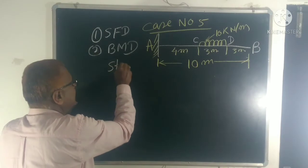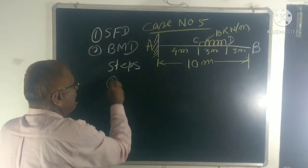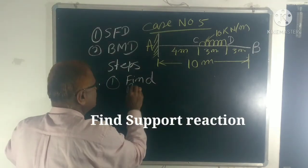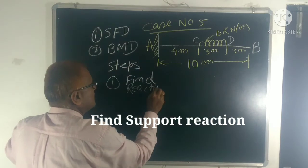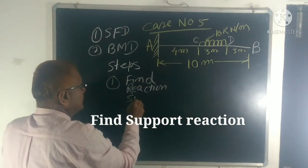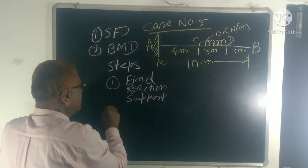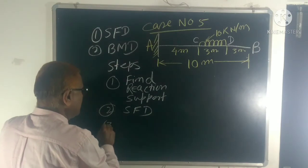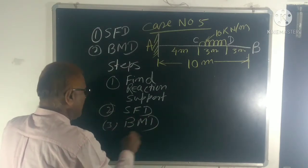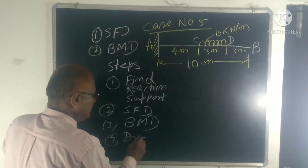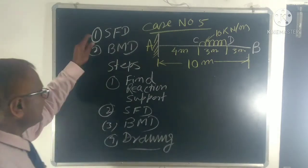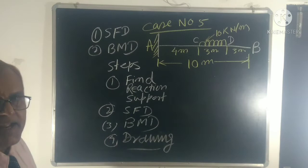First let's see the steps. What about the steps? Find reactions at support. Number 2, then SFD. Number 3, BMD. And 4, drawing. This is 4 steps for this cantilever beam, SFD, BMD and drawing. Okay.